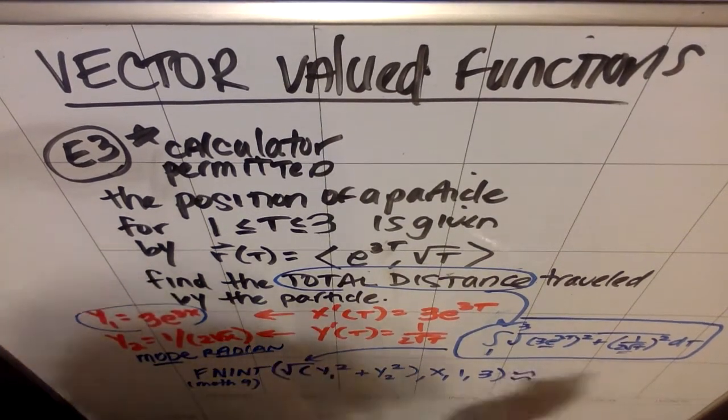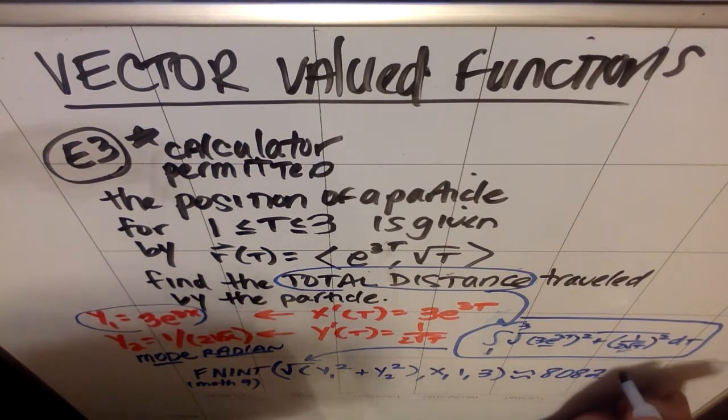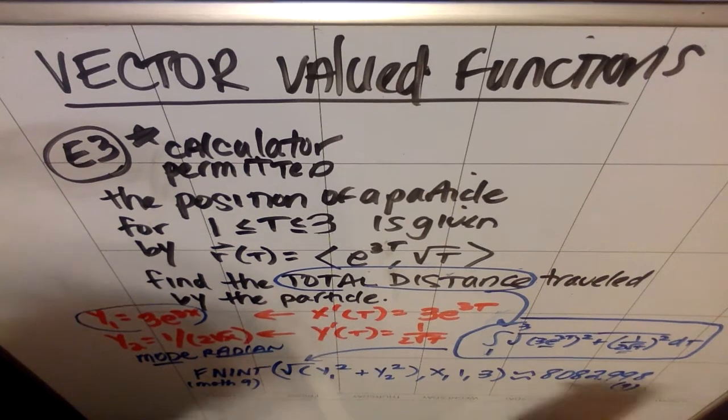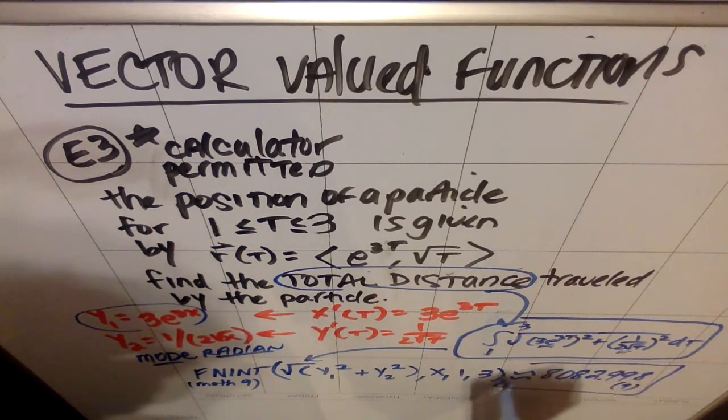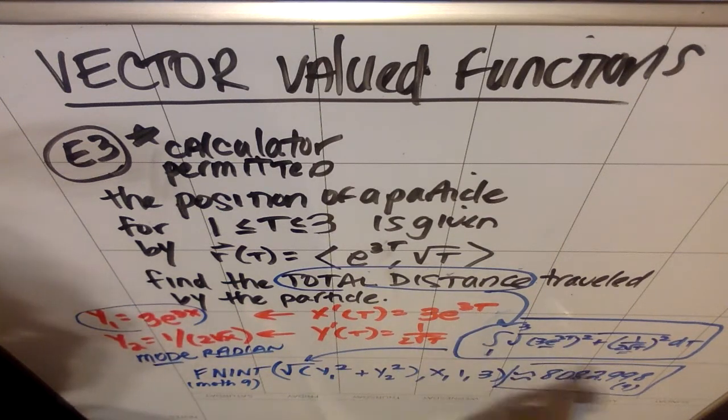Once I do that, I get an approximate value, and I'm going to get that it's 8082.998 if you truncate or 9 if you round. So what the AP needs to see is this notation, that you did this correctly, that you took these derivatives and put them in the formula correctly, and then the final answer.